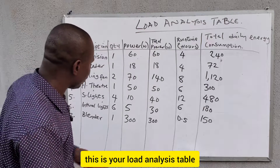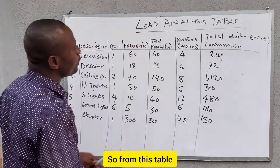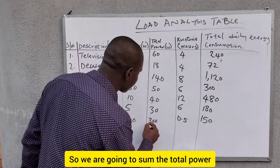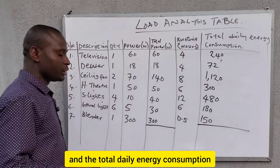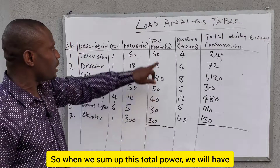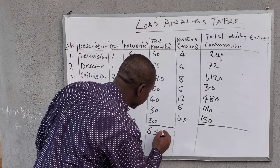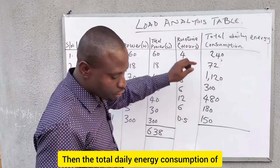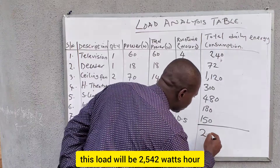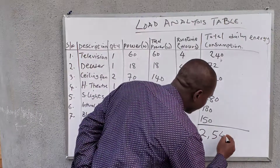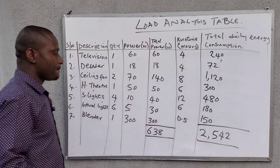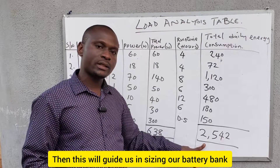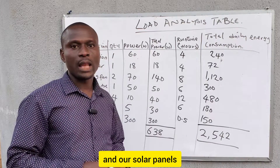Now you have your completed load analysis table. The columns we concentrate on are total power and total daily energy consumption. When we sum up the total power of all loads, we get 638 watts. The total daily energy consumption of all loads comes to 2,542 watt-hours. We will use this information to size the inverter, and it will also guide us in sizing the battery bank and solar panels.